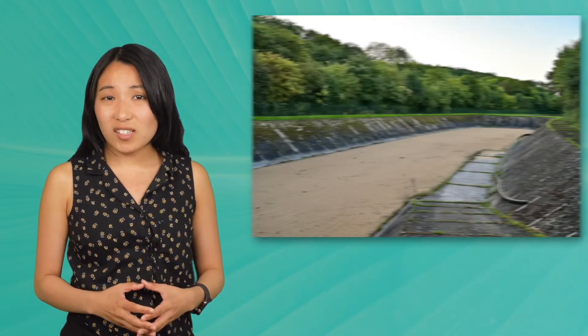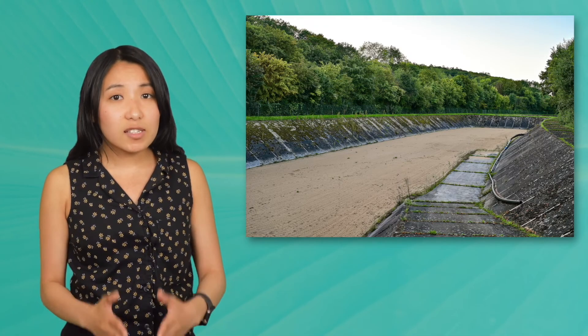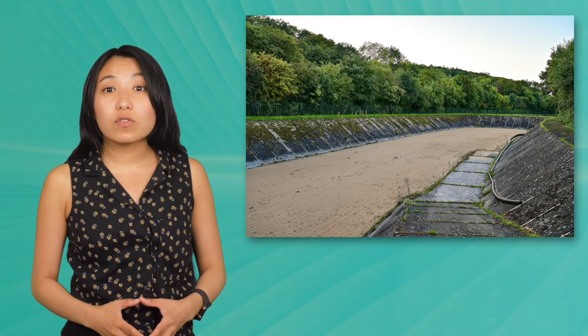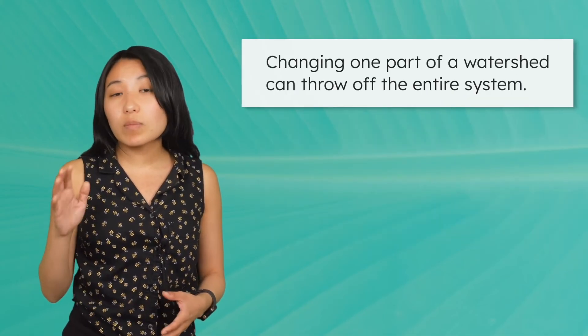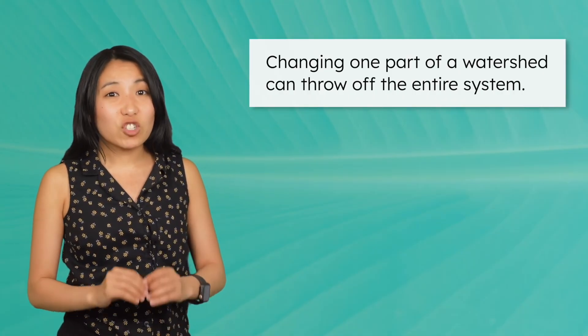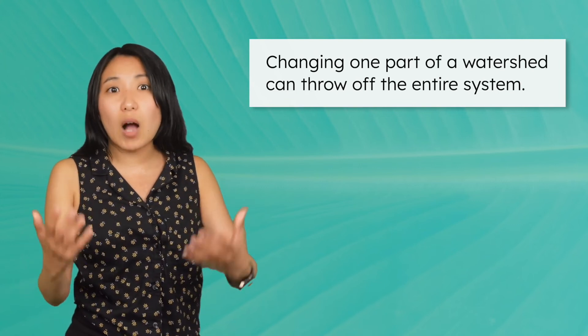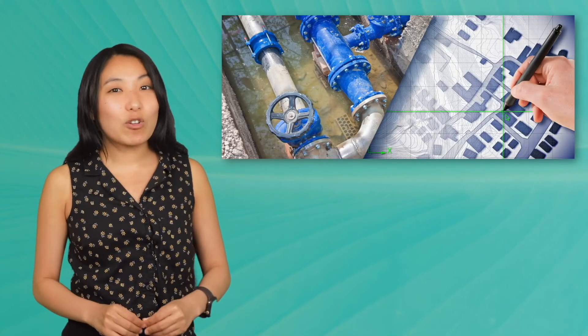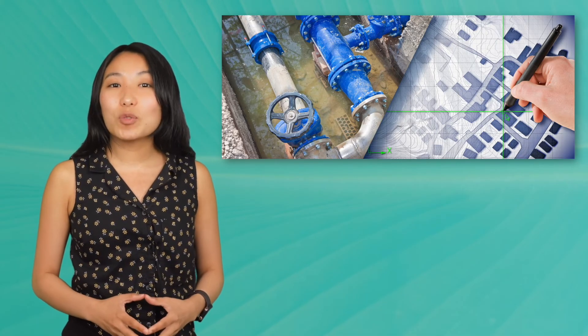Without healthy watersheds, entire communities, farms, and ecosystems can face serious water shortages. But watersheds are vulnerable and water is a limited resource. Changing one part of a watershed can throw off the entire system, setting off a chain reaction that impacts the fresh water supply of people miles and miles away. That's why protecting watersheds matters. By carefully managing our water use and the land that affects it, we can get the most out of this valuable resource.